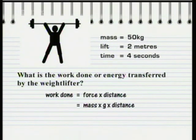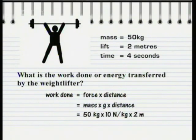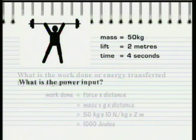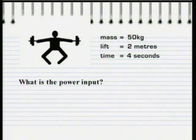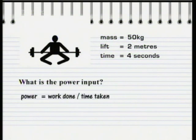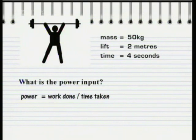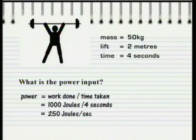That's the mass, 50 kilograms, times the gravitational field strength, 10 newtons per kilogram, times the distance lifted, 2 metres, which is 50 times 10 times 2 equals 1,000 joules. The second part asks: what is the power input of the weightlifter? Power is the rate at which the work is done in joules per second. So that's 1,000 joules divided by 4 seconds equals 250 joules per second, or 250 watts.